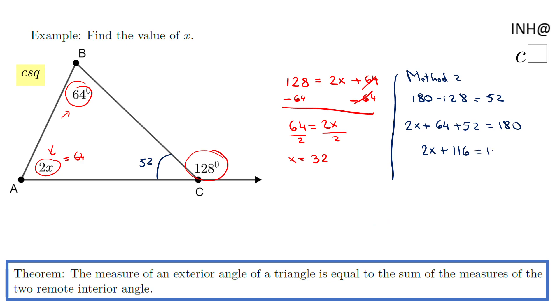We subtract 116 and we get 64 again, the same as the other problem, so x equals 32. This is the second method.